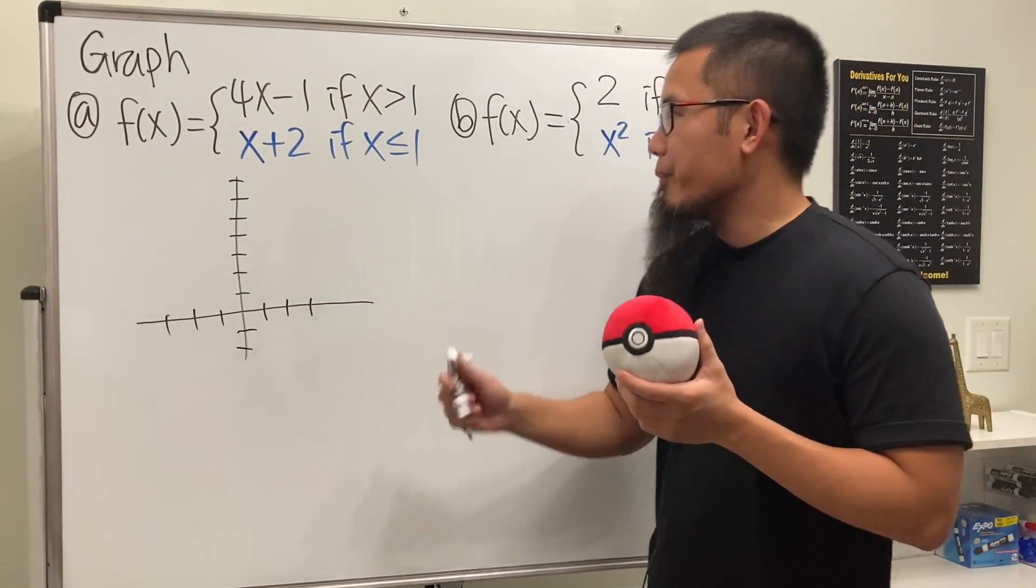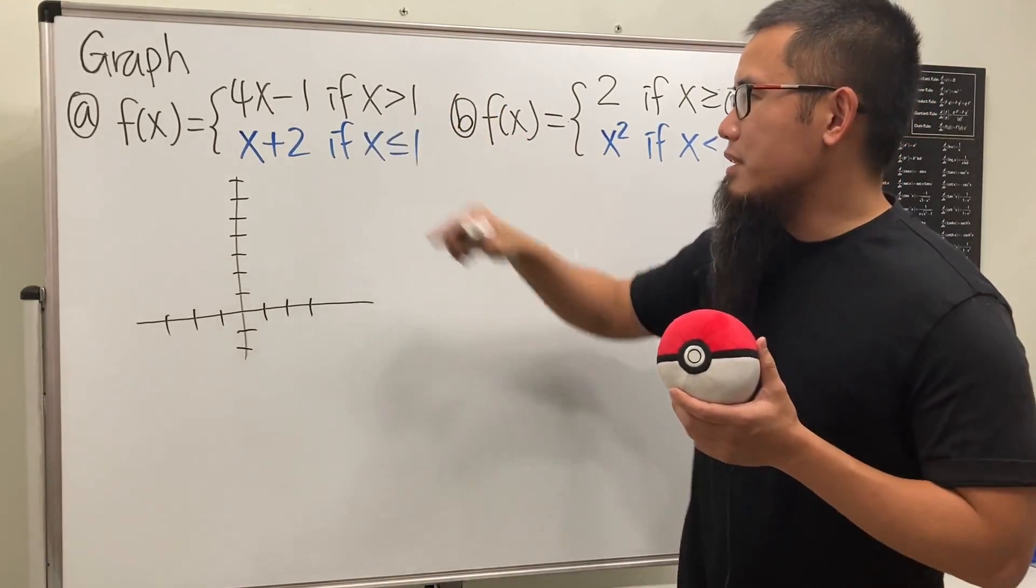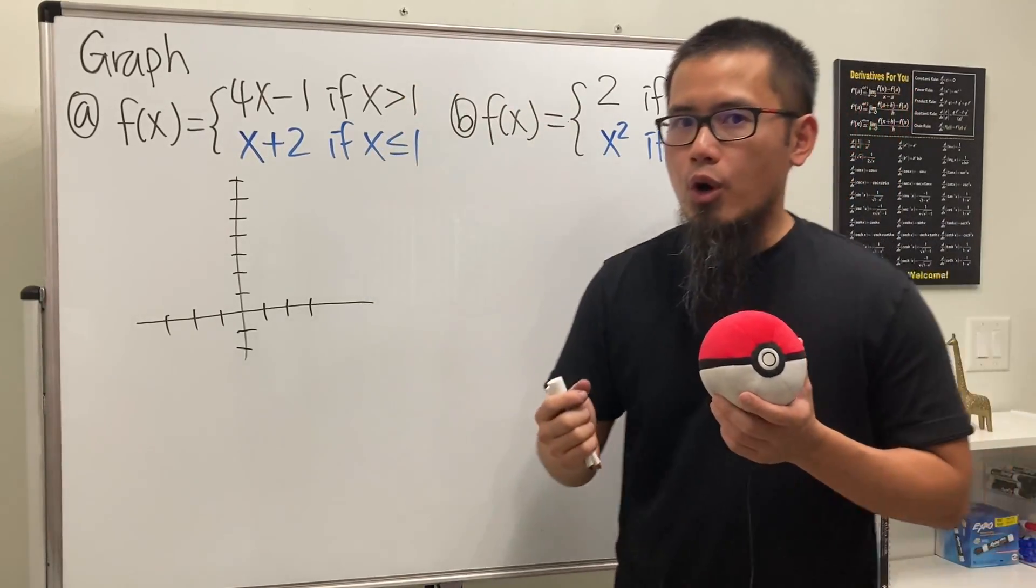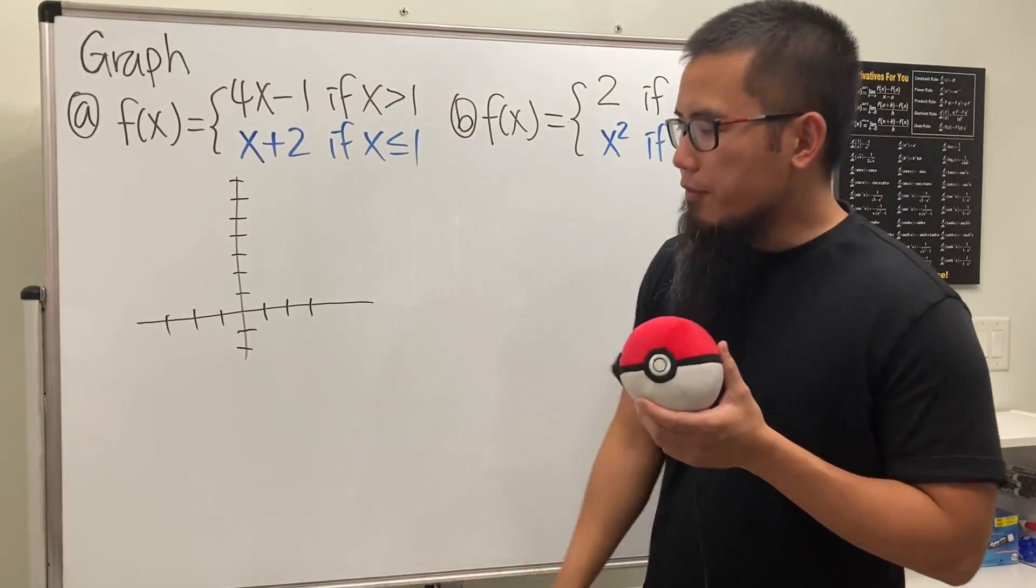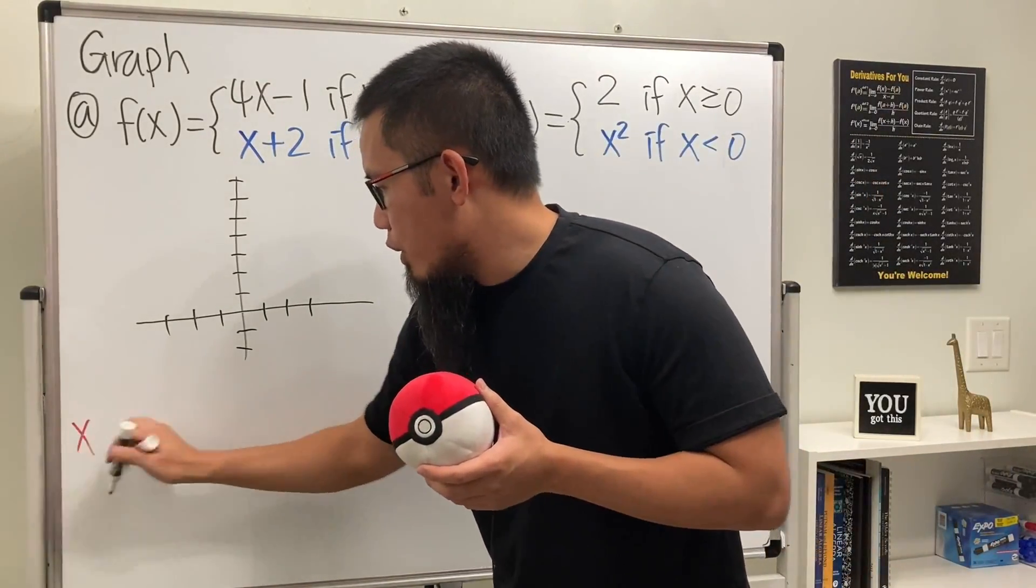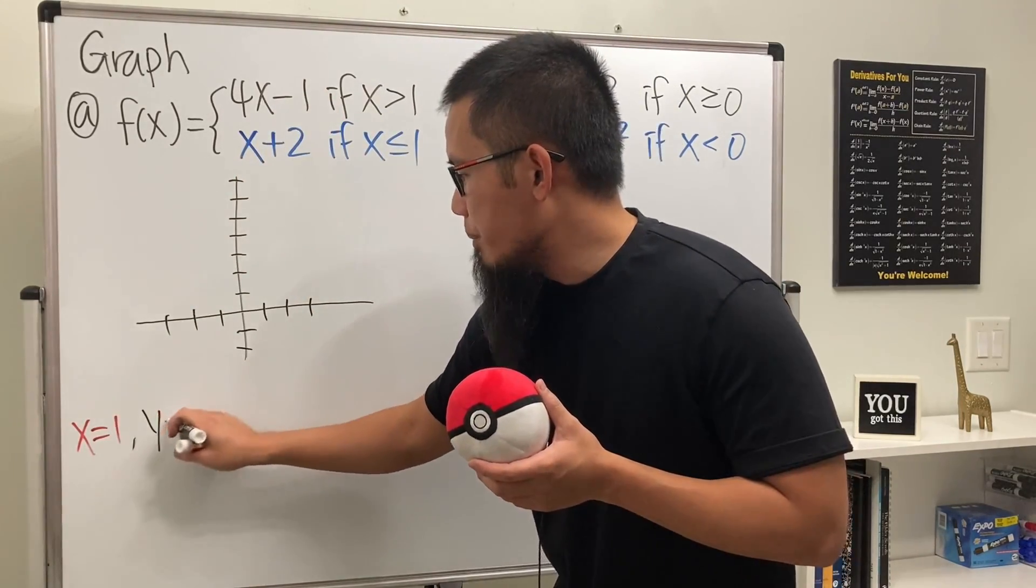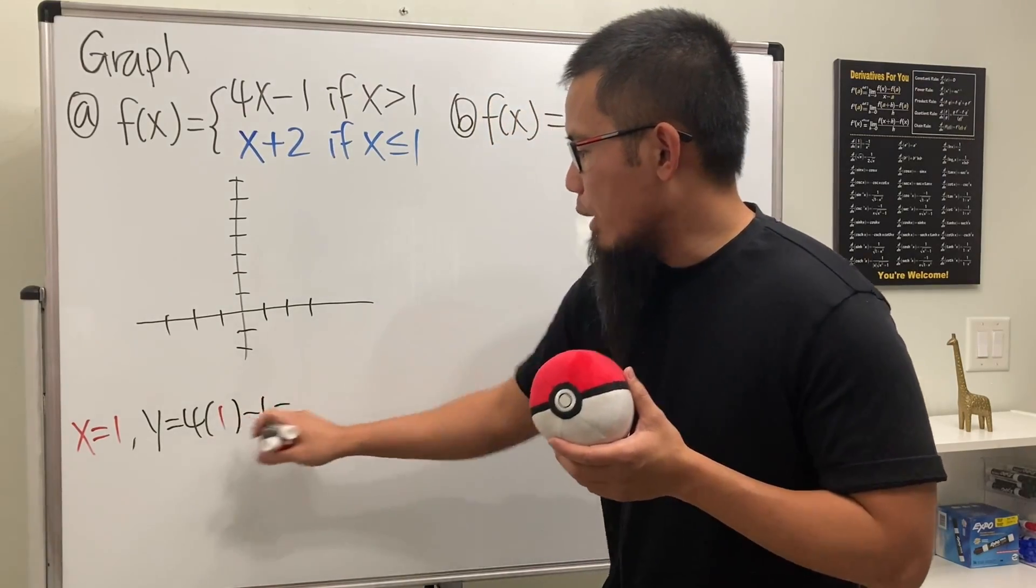All right, here's the deal. We first pay attention to this number, right, the endpoint for the pieces. Well, even though x is not equal to 1, we still have to know where the line starts. So I will still have to put 1 into this x and compute the y value. So here we go. When x is equal to 1, we see the y value will be 4 times 1, and then minus 1. And that will give us 3.